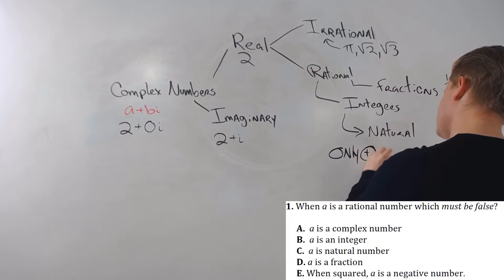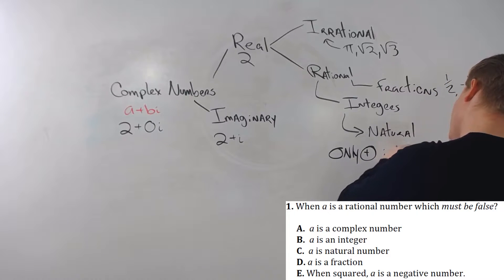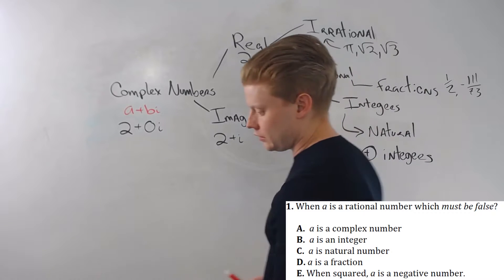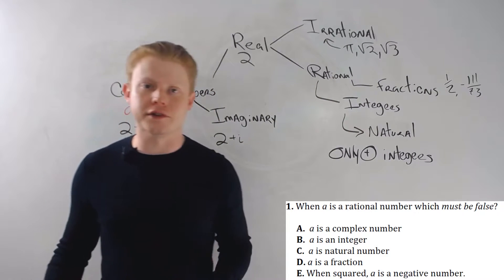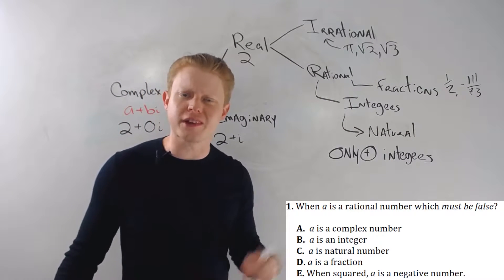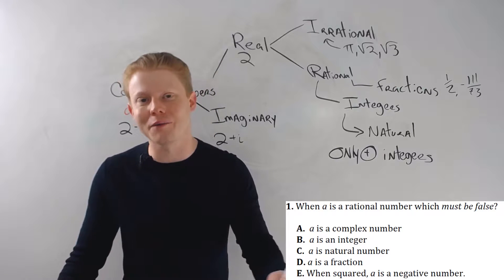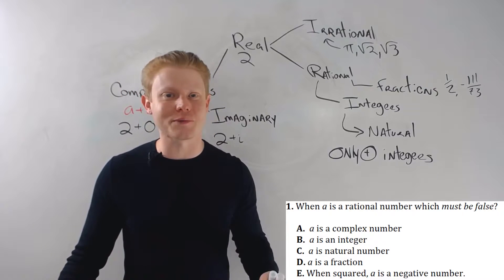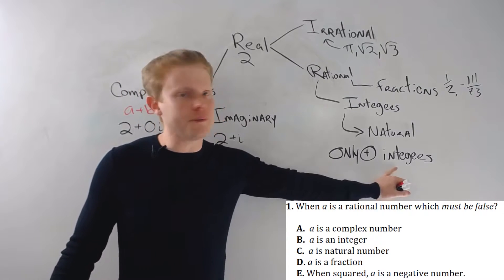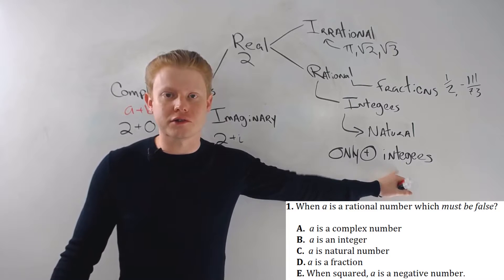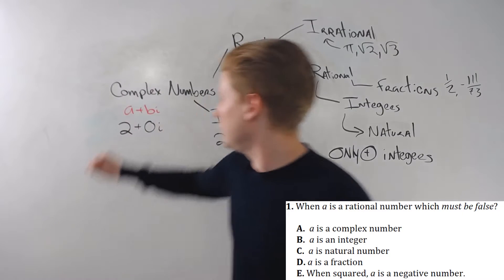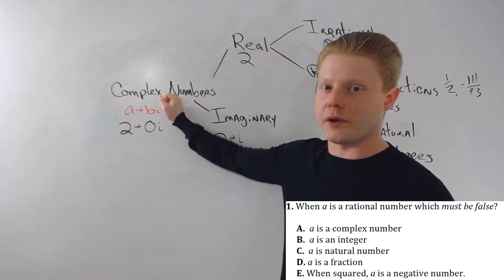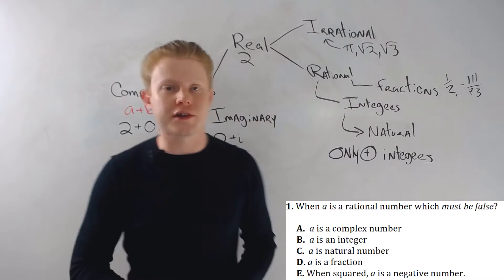Trick number two: natural numbers are only positive integers. So only positive integers — that's the key. Those are the two tricks. Biggest trick in the book as far as the ACT is concerned: complex numbers. Everything's a complex number. Second biggest trick: natural numbers are only positive integers.